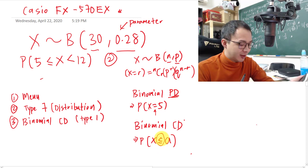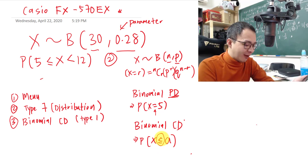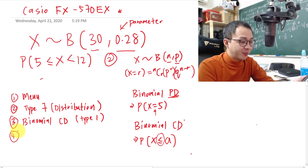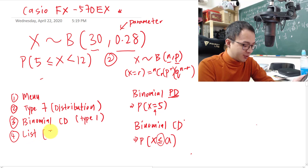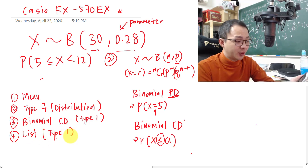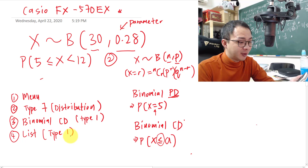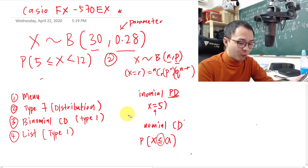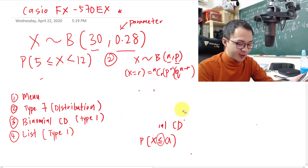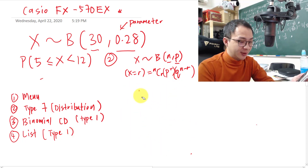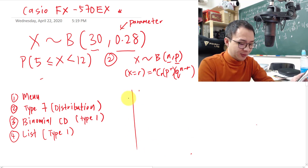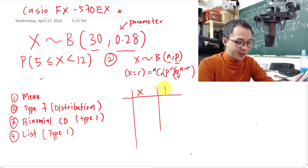After pressing 1 to select Binomial CD, press 1 again to go into the list. You should see a table asking for x values and showing corresponding p values.